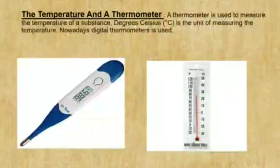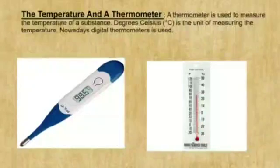Now let's know about temperature and a thermometer. When a substance gets heat, it becomes warm and then hot. If we put a hand or finger in water to judge how hot it is, we can feel it being warm and then hot. But that is not an accurate measure. Besides, if the substance is very hot, we can even get a burn.